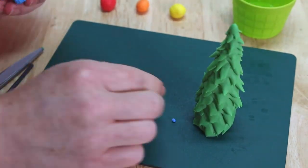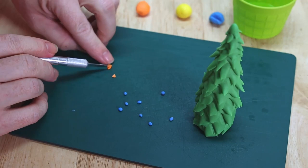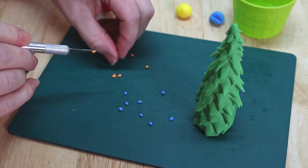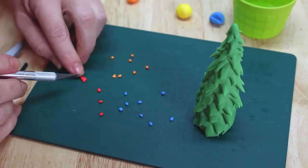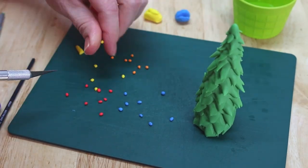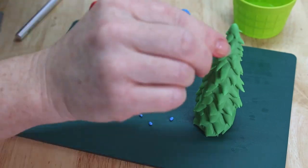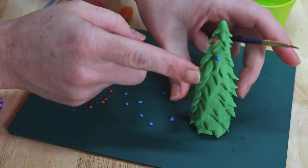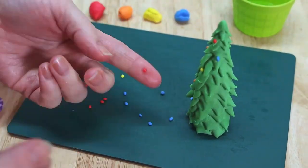So for the decorations, we're going to keep this super simple. We're just going to use a little bit of blue, a little bit of yellow, some orange, and some red. We're just going to make some tiny little balls to decorate our tree and then we're going to finish it off with a little yellow star on the very top which I will eventually be painting gold. And then our Christmas tree is complete.